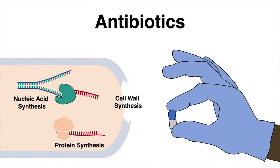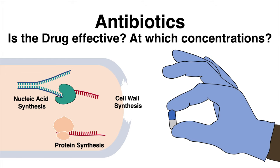Antibiotics are extremely important drugs against bacterial infections. There are many mechanisms of action, but what all those compounds do is to eliminate bacteria. More and more bacteria get resistant to antibiotics, which requires the constant development of novel drugs. When a compound is designed, it needs to be tested whether the bacteria are sensitive to this drug and which concentrations show a significant effect to stop bacterial growth. This concentration is referred to as the MIC, the Minimum Inhibitory Concentration.